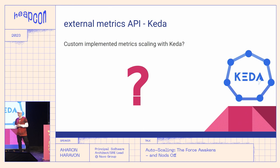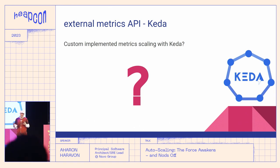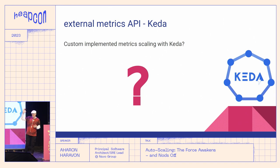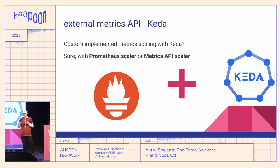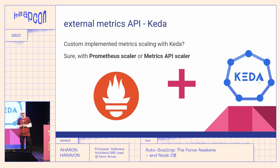But what if the application metric we need to scale upon is not a simple derivative of a property of an external system — can we still leverage KEDA? Yes. You can use the Prometheus scaler, which will read metrics from Prometheus and therefore retain most of the advantages of KEDA without the disadvantages of the Prometheus adapter mentioned earlier. Alternatively, you can opt for the metrics API scaler, which skips Prometheus altogether and directly queries your service endpoint to retrieve the metrics.